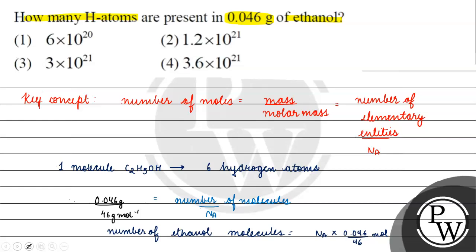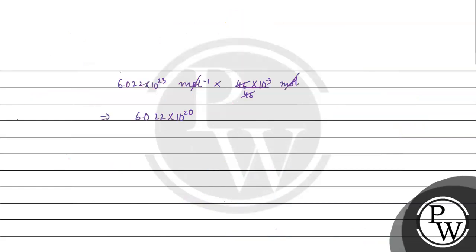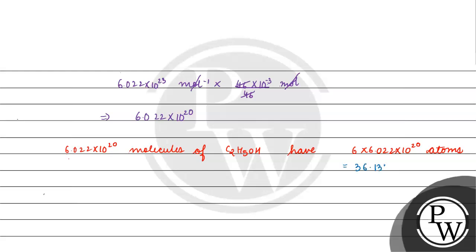If we have 6 hydrogen atoms in one molecule of ethanol, then 6.022 × 10²⁰ molecules of ethanol have 6 × 6.022 × 10²⁰ atoms = 36.132 × 10²⁰ = 3.6132 × 10²¹ atoms of hydrogen.